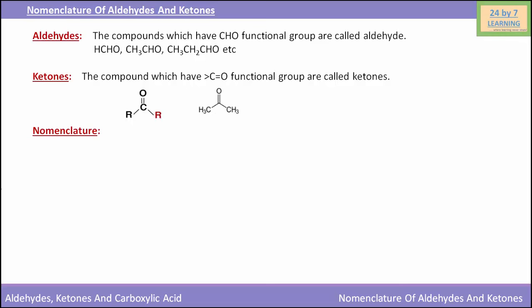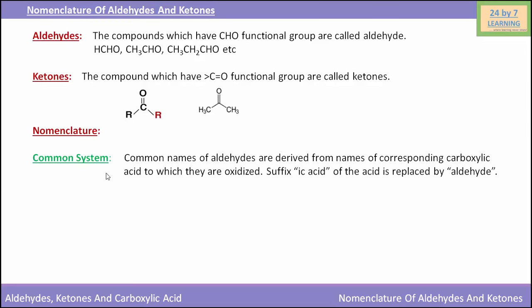Now we will see the nomenclature of aldehydes and ketones. As we know there are two systems of nomenclature: the common system and the IUPAC system. First of all we will see the nomenclature of aldehydes by the common system. Common names of aldehydes are derived from the names of the corresponding carboxylic acid to which they are oxidized.